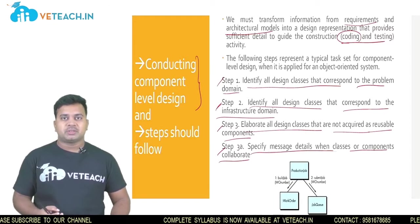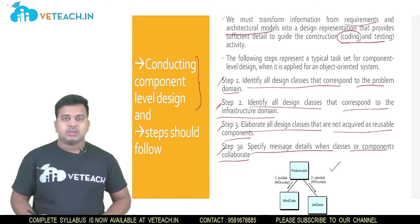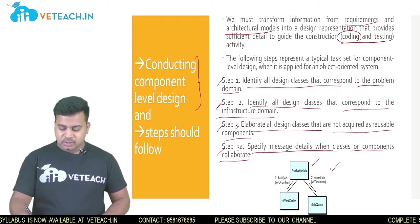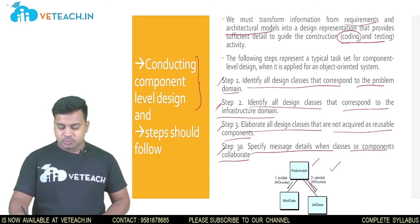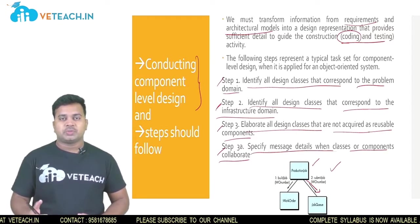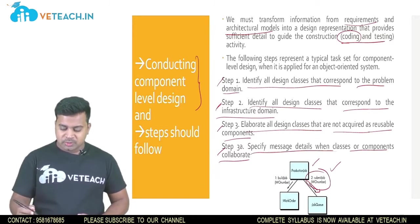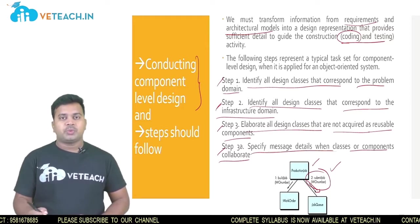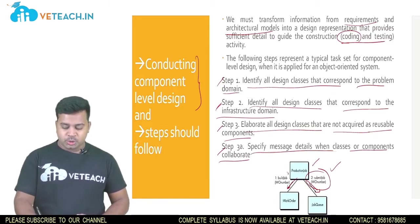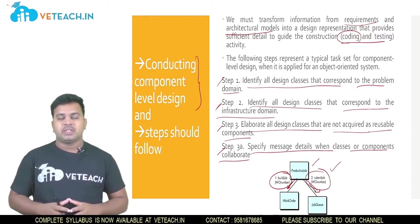In the fourth step, specify message details when classes or components collaborate. You need to specify messages when classes and components are collaborating with each other. For example, a print job sends a job to the printer; if other jobs are already in the queue, it gives a message submitting the job to the job queue. Similarly, you can see the work order and build job — this kind of message passing must be mentioned when communicating between classes.